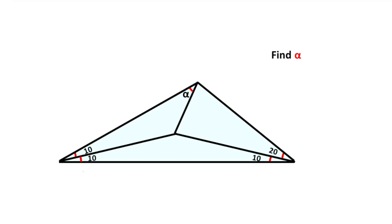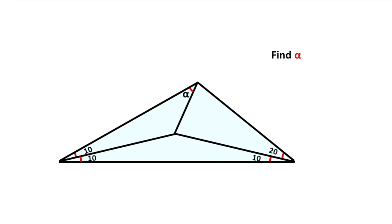Notice that this triangle is an isosceles triangle, because the base angles are equal. So these two side lengths must be equal to each other.